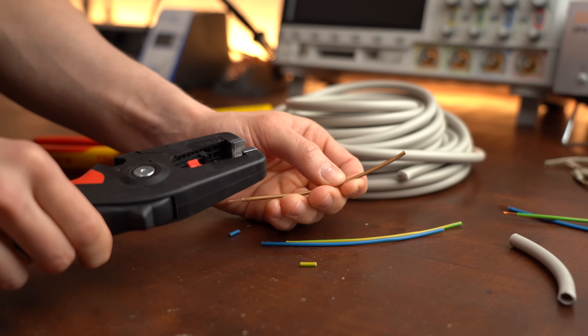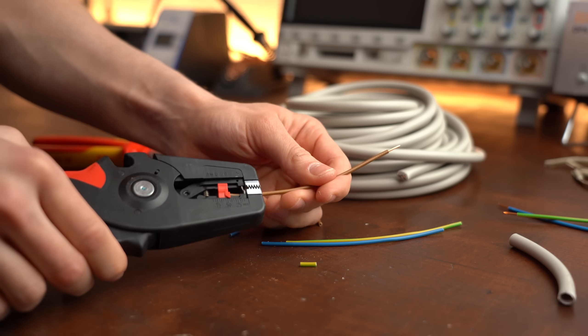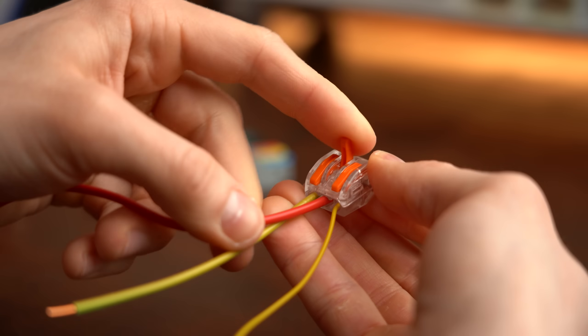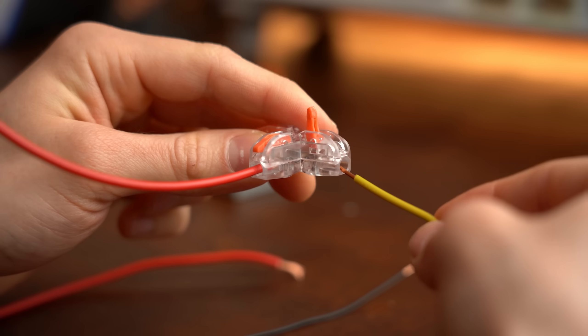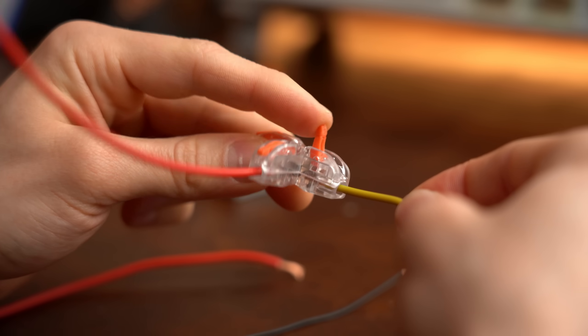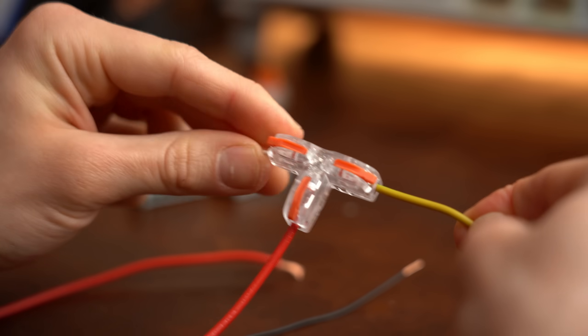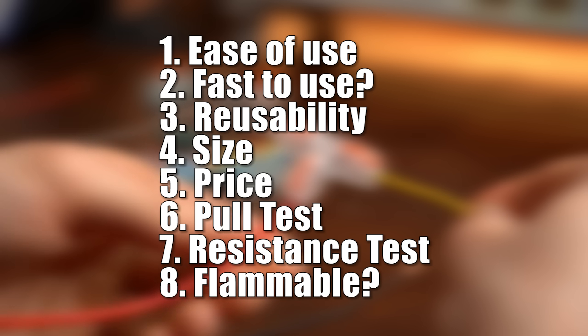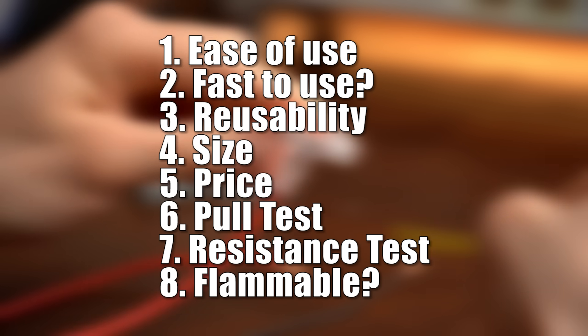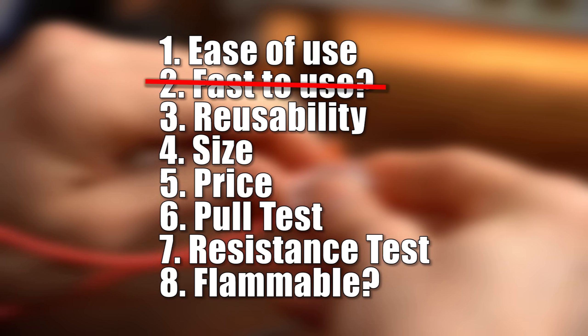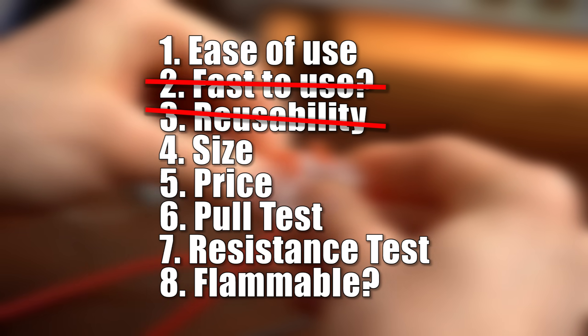But anyway, I once again started my proper investigation by firstly testing out all connectors individually with a couple of different wires in order to come up with a suitable list of comparison criteria. Now this right here was my old test list for wire nuts and WAGO connectors, but I think we can cross off the fast to use, reusability, and flammable aspects.